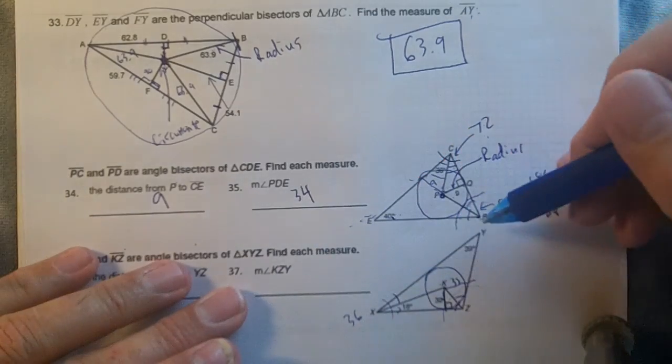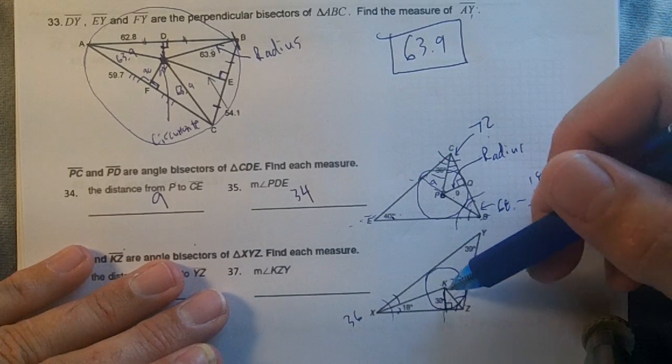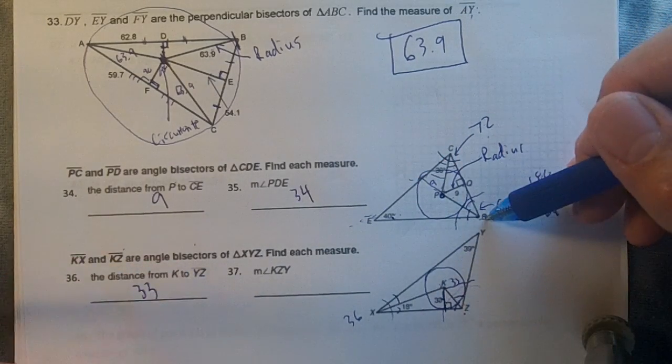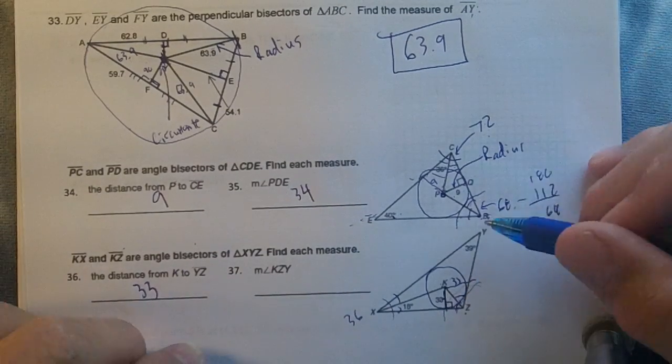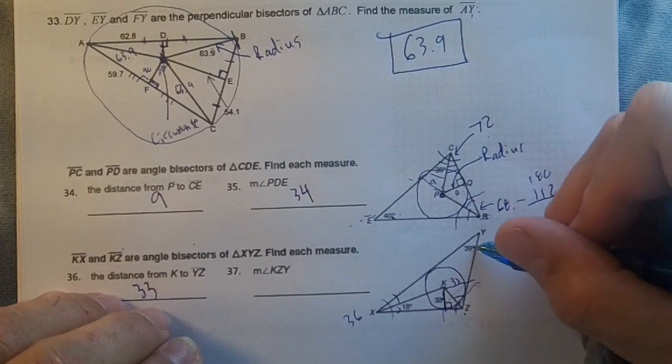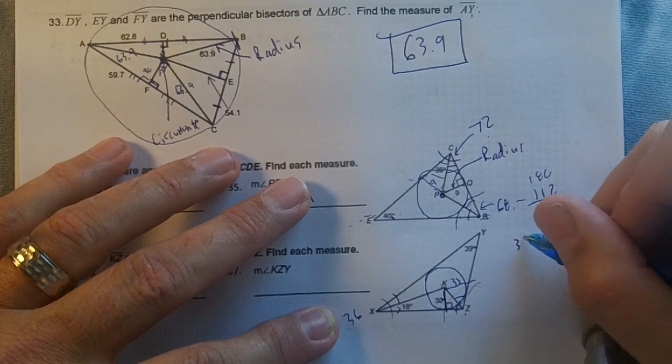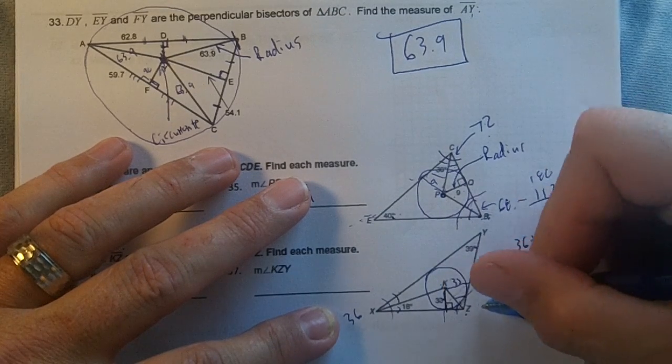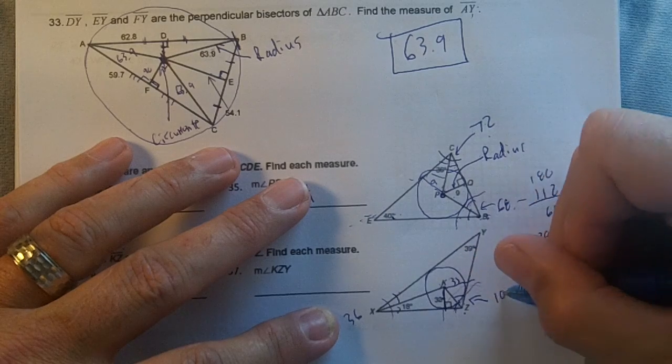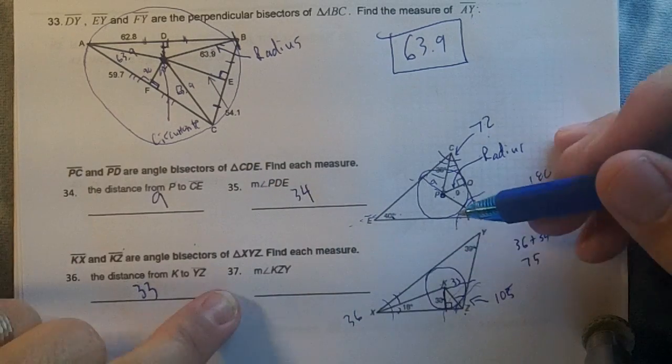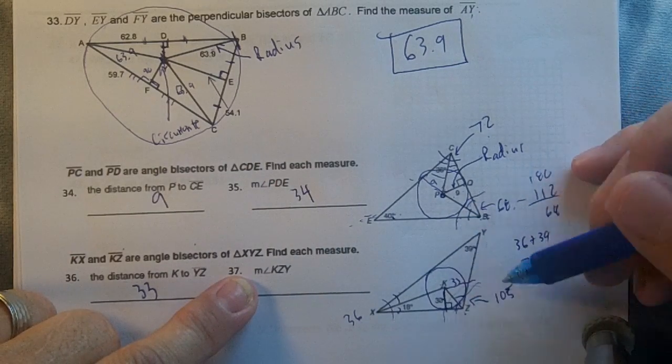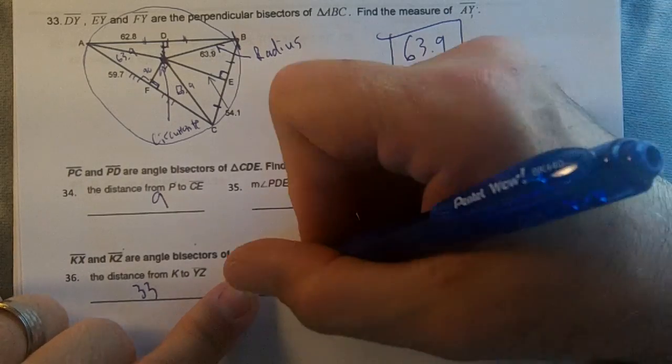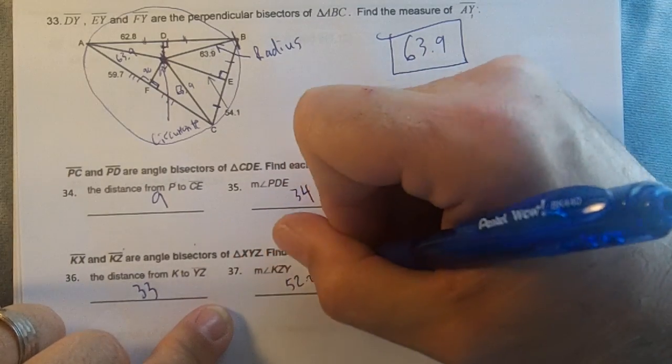And the measure of KZY. Where's K at? KZY, we need to get this whole thing. So this is going to be 36, that's 39. 36 plus 39 adds up to 75, this whole thing would be 105. And KZY, half of 105 is 52 and a half, so 52.5 degrees.